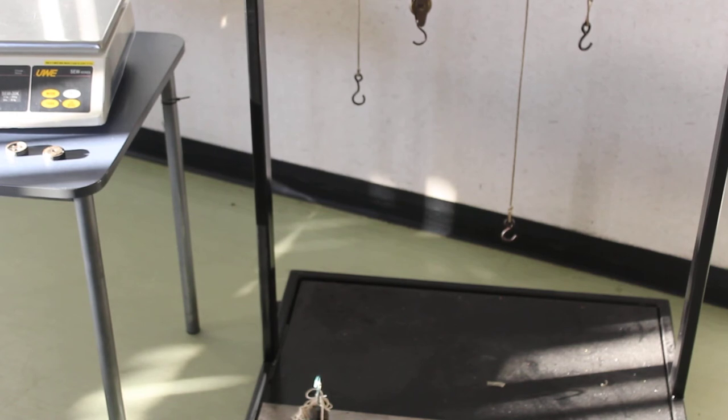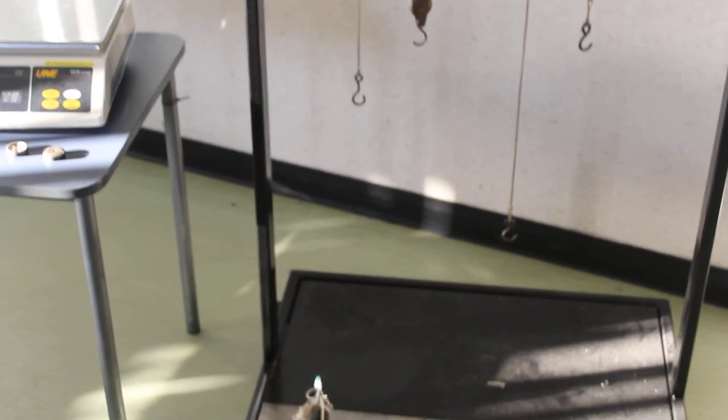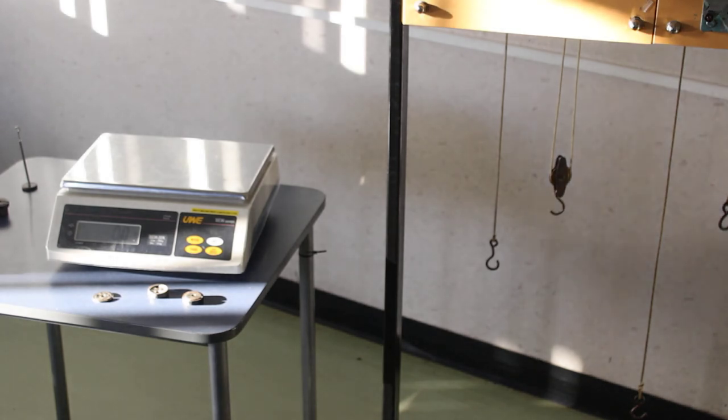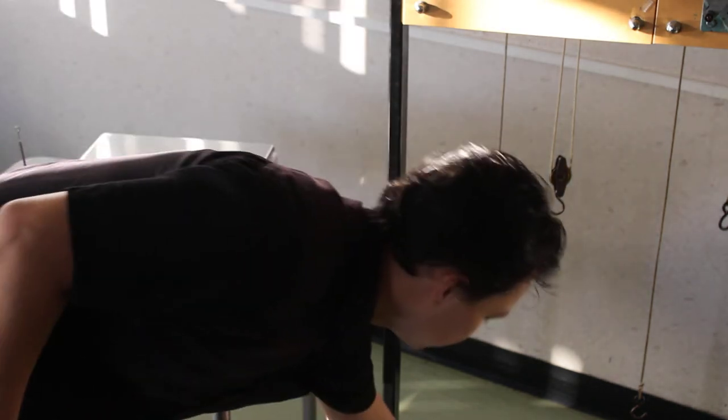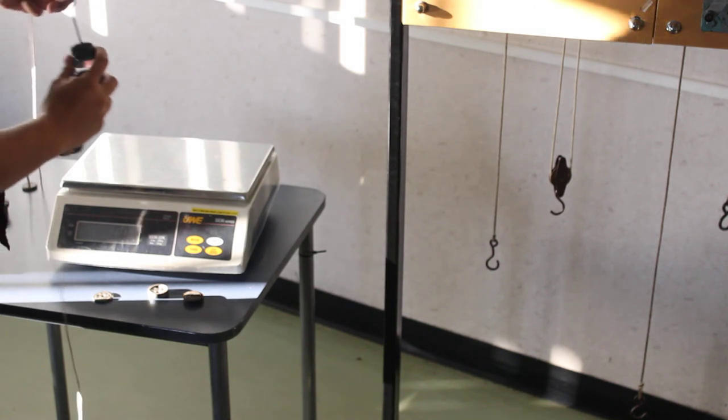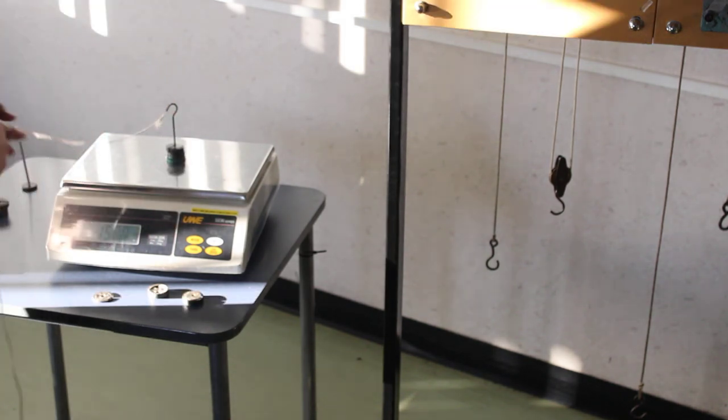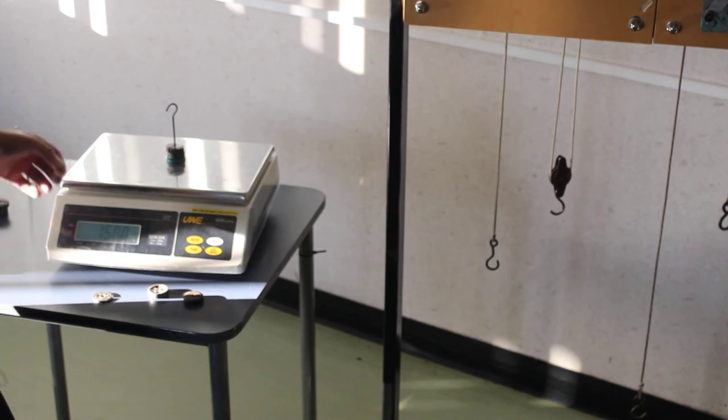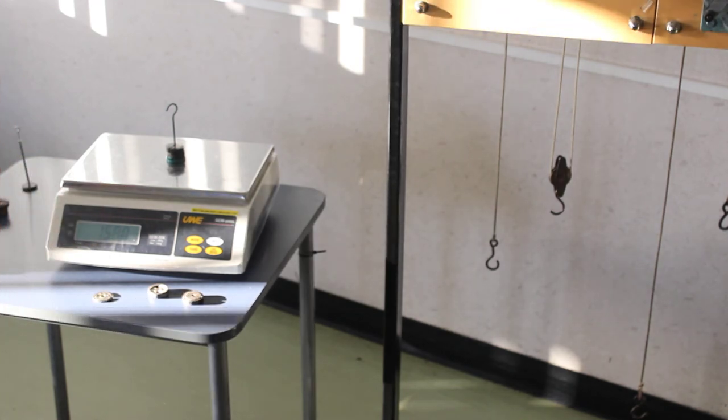So you'll be doing that for a range of different masses. You'll get a measurement for mass and you'll get a measurement for time. Now once we've done that, I'll place the masses onto the scale and get a reading for the mass that we have here.